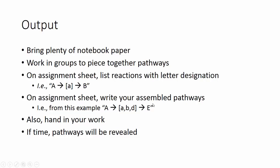So in your assignment sheet, you write your assembled pathways. So in this case, we have A to E, where A goes through A, B, D, all the way to E. So first you'll list your reactions, your individual reactions, in this manner. And then once you've assembled your pathway, you'll list your pathway in a manner looking something like this.